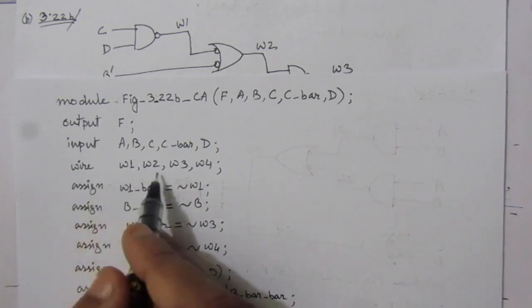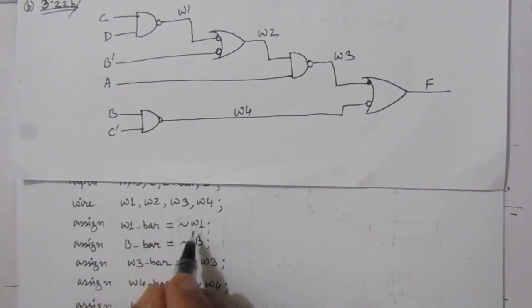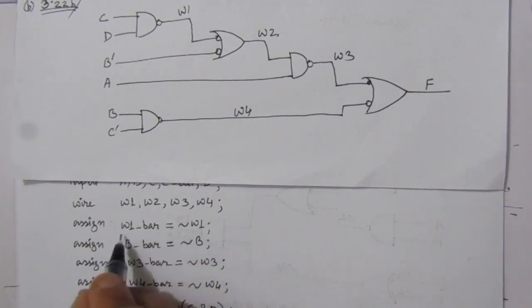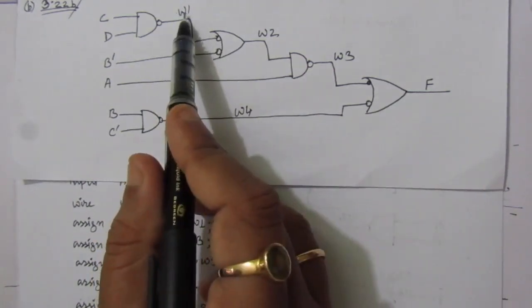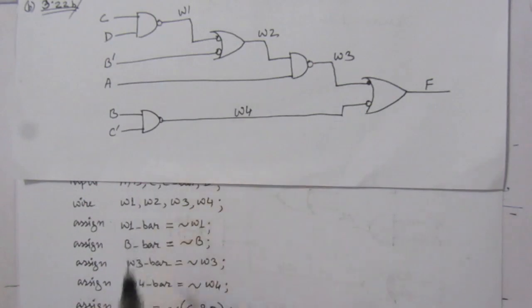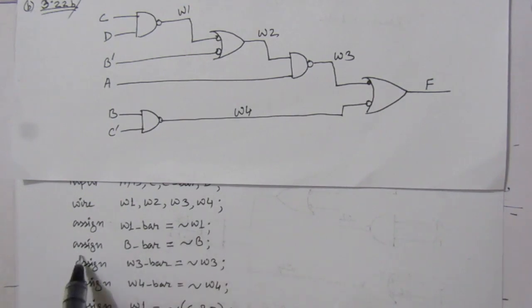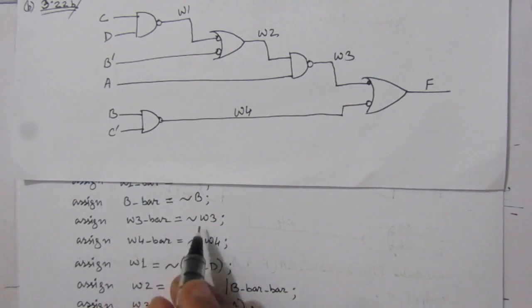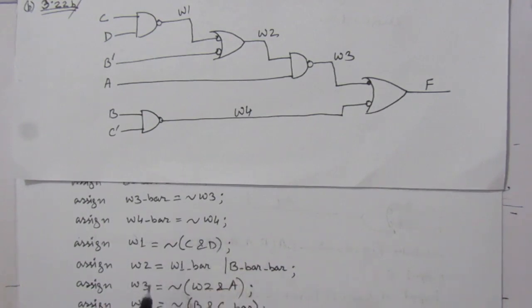We define wires W1, W2, W3, and W4. We assign W1-bar as tilde W1 — that means NOT W1 — because we have an inverted input. Similarly, B-bar is the complement of B. We also assign W3-bar as the complement of W3, and W4-bar as the complement of W4.